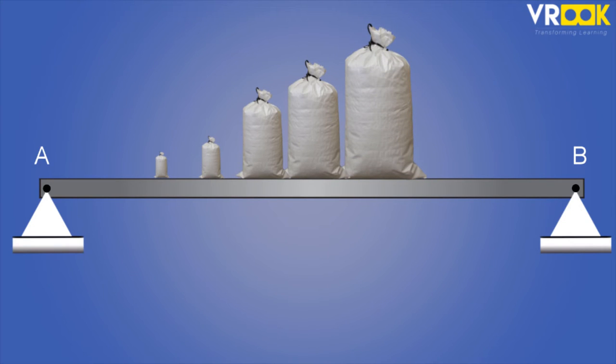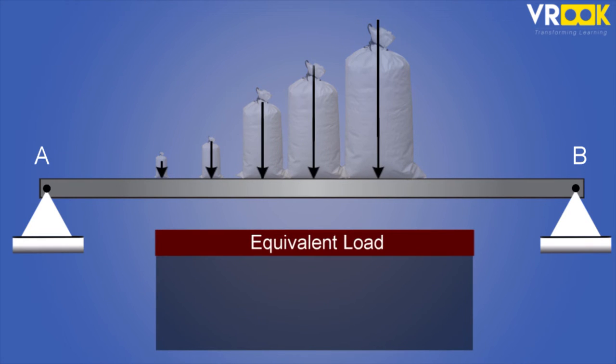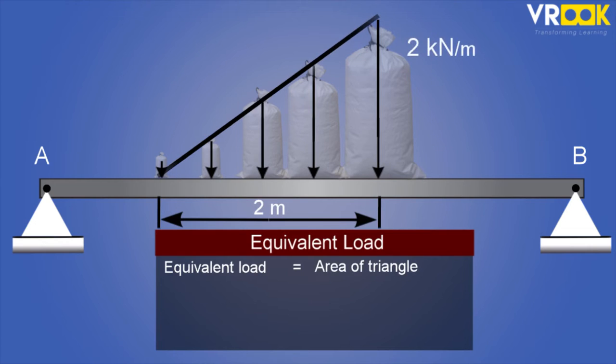Even this load can be replaced by an equivalent point load. The magnitude of that is given by the area of triangle formed by UVL, which is half times base times height of a triangle. Base is the span length for which UVL is acting. Height is the maximum load intensity. So we have half times 2 times 2 which is 2 kilonewton.